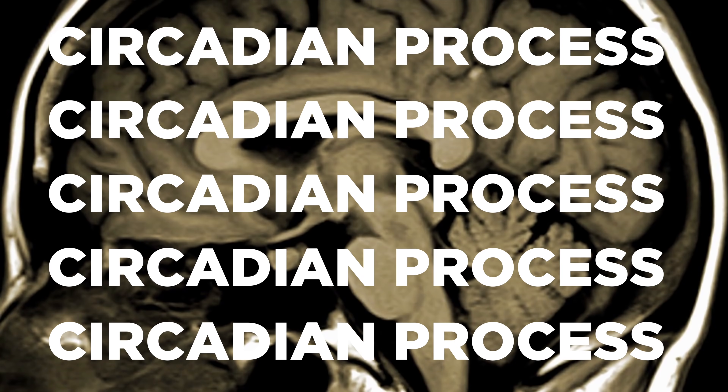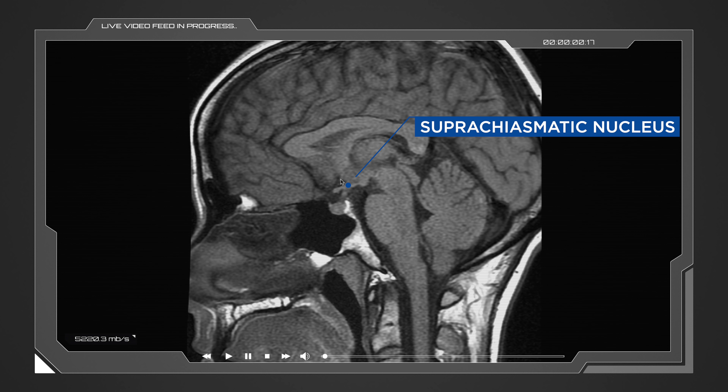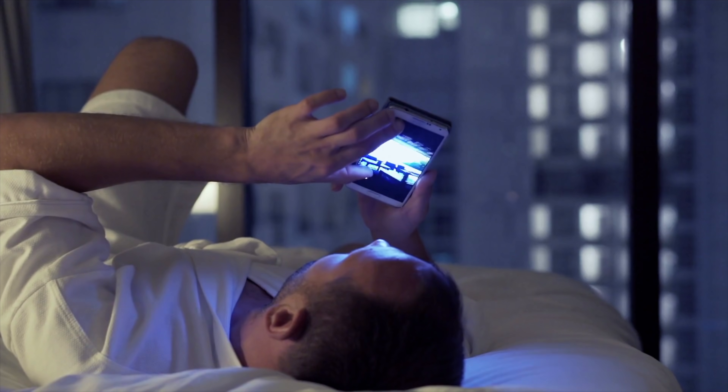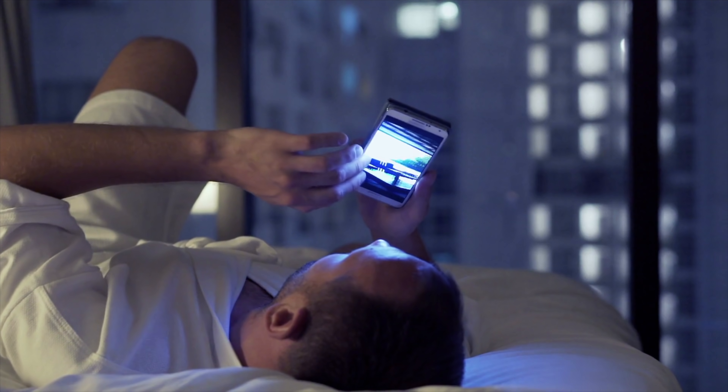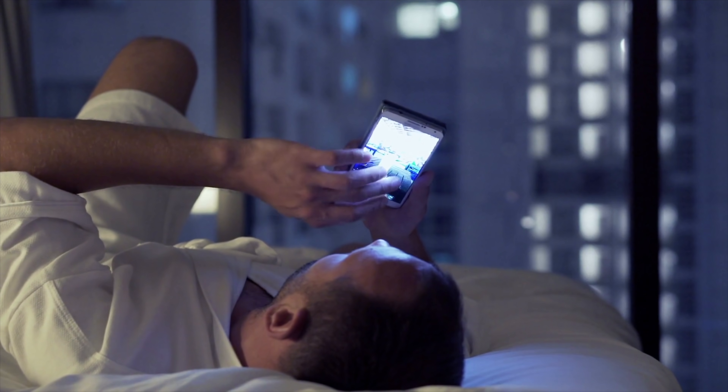Now let's look at the other major factor that regulates your sleep: your circadian process, which is driven by your circadian pacemaker, also known as the circadian clock. It's located in the suprachiasmatic nucleus of the hypothalamus, right next to the optic chiasm. The optic chiasm is the collection of nerves that senses light from the environment — think of these nerves as an extension of your eyeballs.